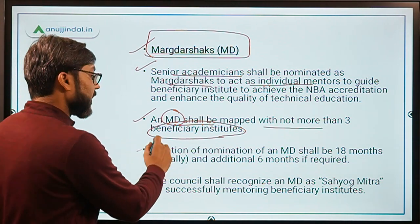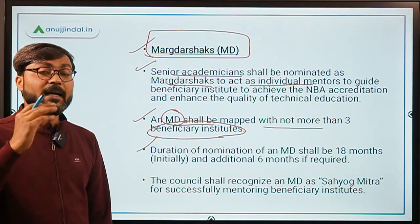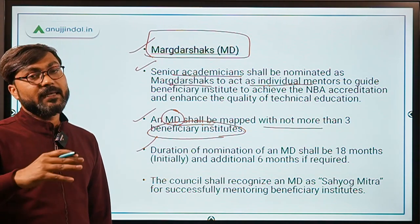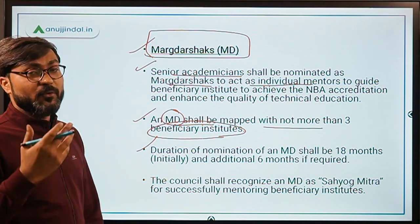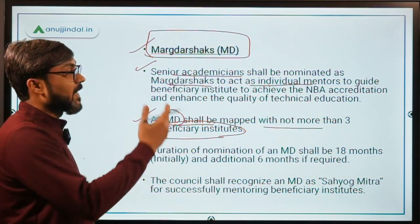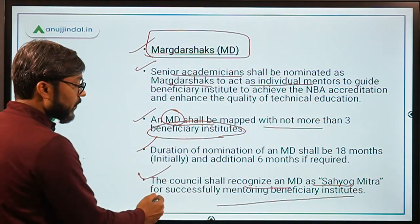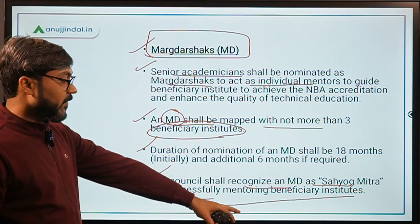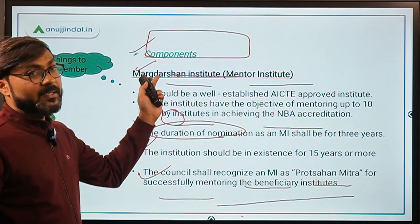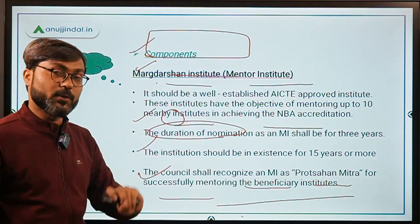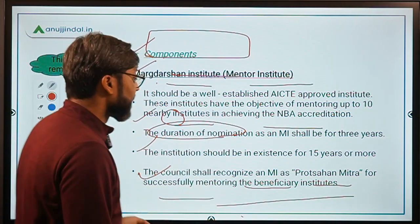The duration of nomination of a Marg Darshak will be 18 months, and this can be extended up to 24 months if required and felt necessary by AICTE. The council shall recognize Marg Darshaks as Sahiyog Mitra for successfully mentoring the beneficiary institutes, while the Marg Darshan Institute will be recognized as Protsahan Mitra. Do not confuse between Protsahan Mitra and Sahiyog Mitra.